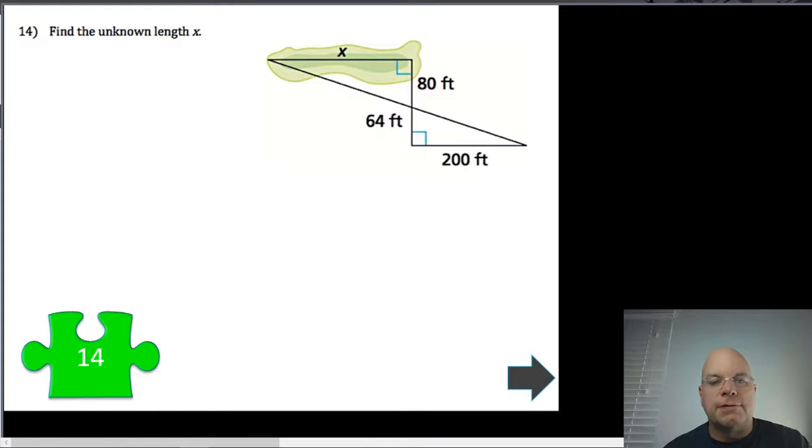Problem 14, find the unknown length X. This is an indirect measurement problem. You can sort of imagine this looks like a swamp or something, and if you knew these other dimensions, and you had similar triangles, you could use these dimensions to figure out the dimension. You'd rather not get down and measure directly. So we have an angle here, a vertical angle here and here, which must be congruent. We know the 90 degree angles are congruent. So this third angle of each of these triangles must also be congruent.